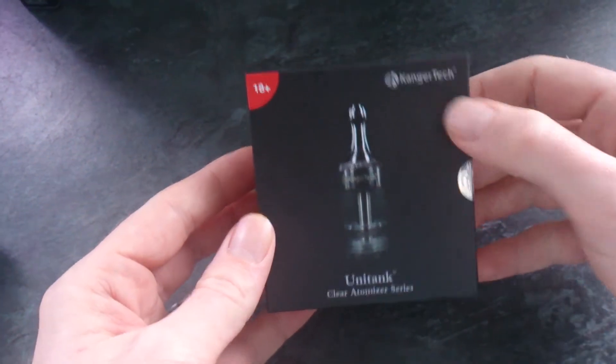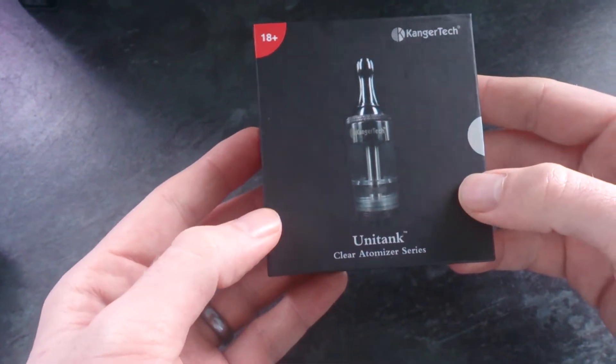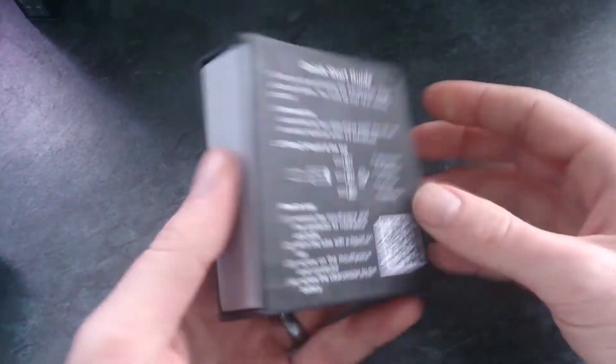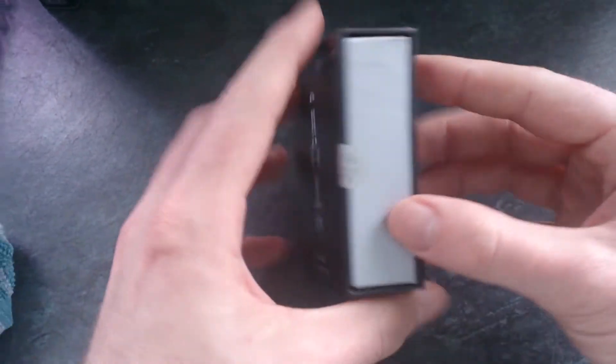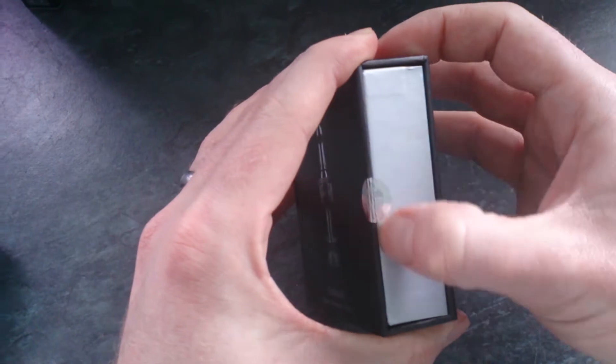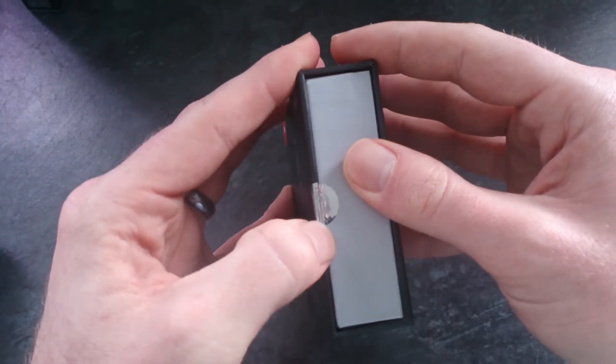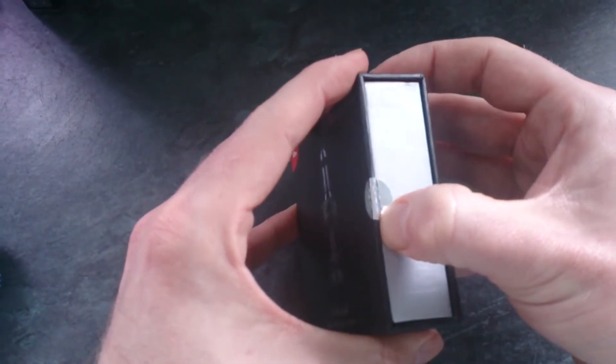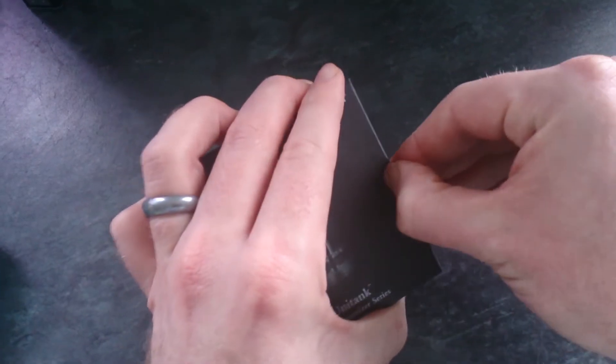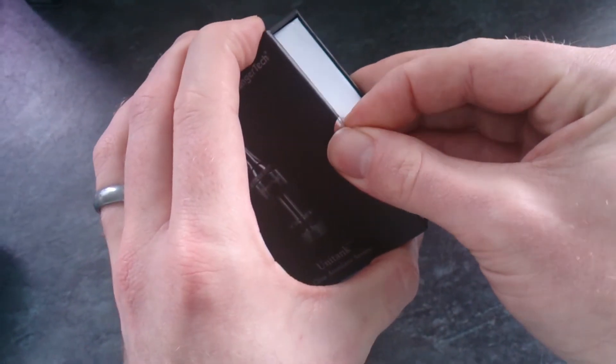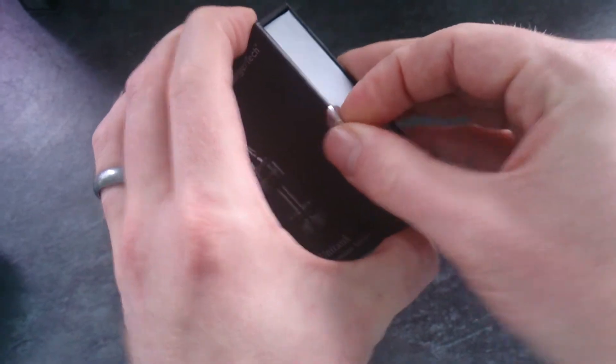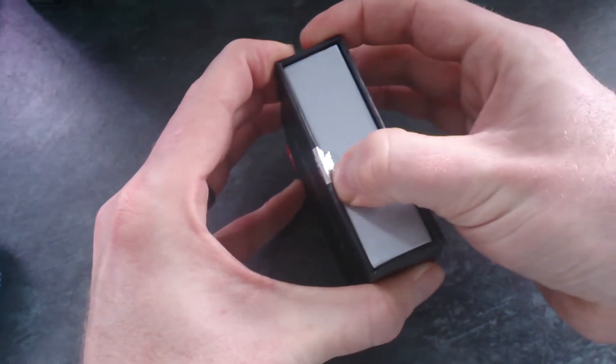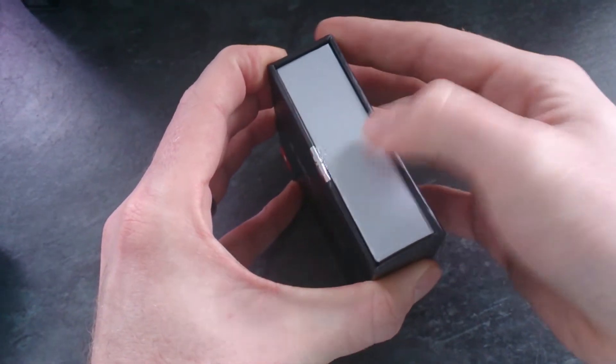This is the Kangatech Unitank, not the Pro Tank. This is how it comes when you buy it. Always make sure this seal is here and you know you've got a genuine product. The seal will be sealed with that sticker. It's a proper seal when it doesn't come off, that little security seal there it goes.